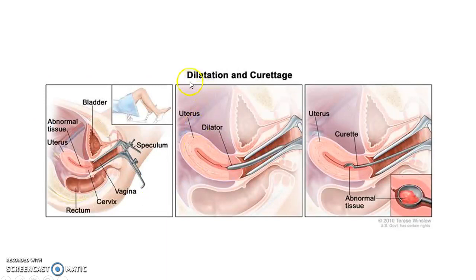This picture shows the procedure of DNC. Basically the vaginal wall is retracted, the cervix is dilated using Hegar dilators up to size 8, the curette is introduced and the endometrial cavity is curetted thoroughly.